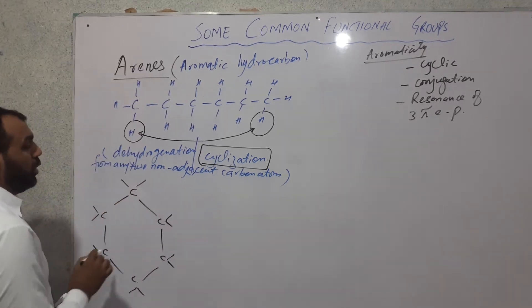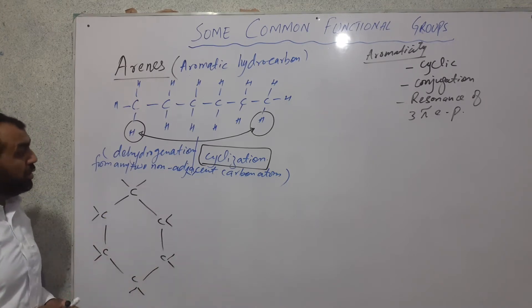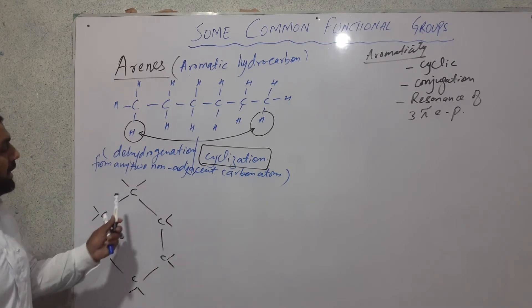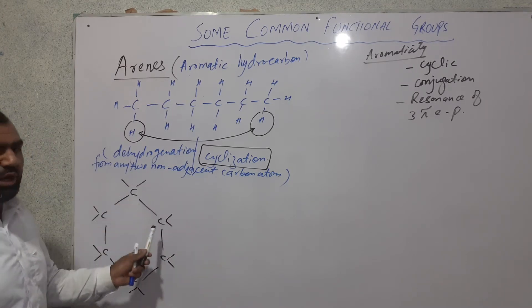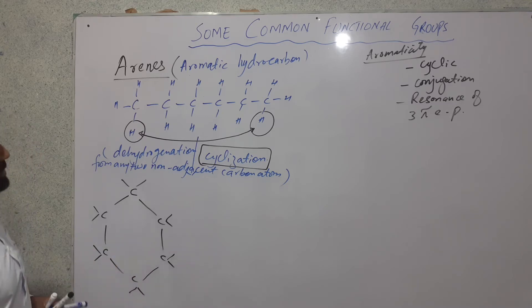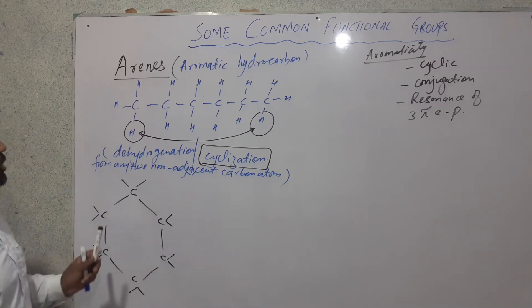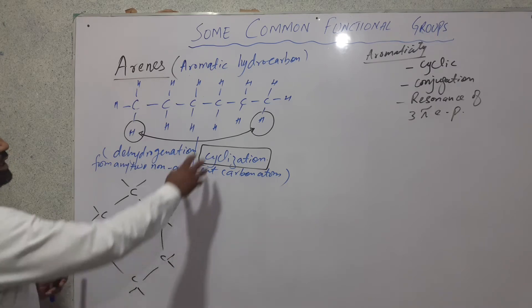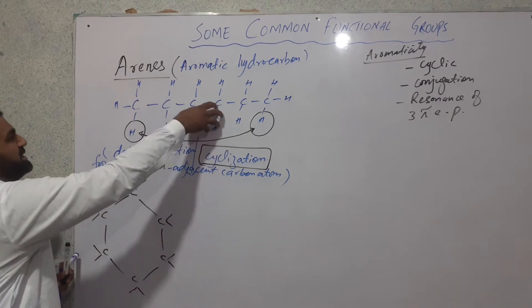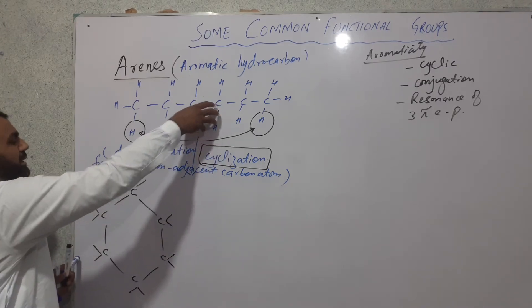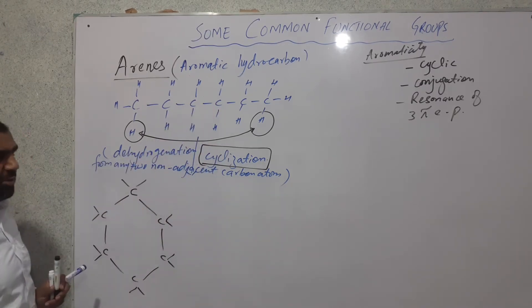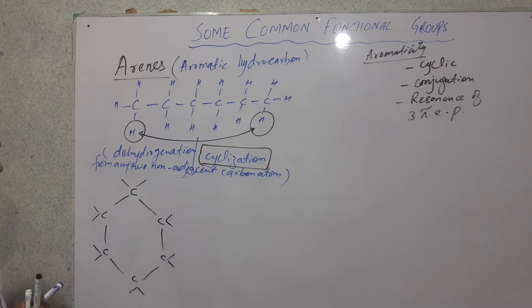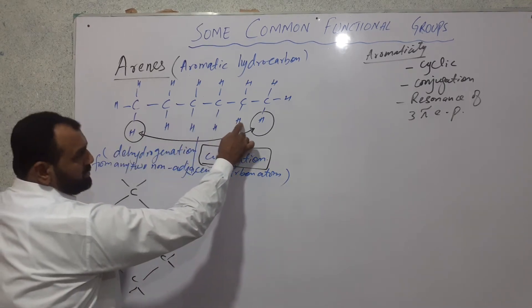Since this compound has carbon-carbon single bonds, six carbon atoms, and is cyclic in nature — with six carbons and single bonds — it is called cyclohexane. So we have converted open chain n-hexane into cyclic compound cyclohexane.